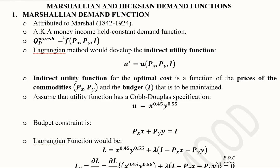In this video we will learn about the Marshallian demand function, which is one of the most famous demand functions. It is attributed to Marshall, who lived from 1842 till 1924. This is the person to whom this demand function is attributed.